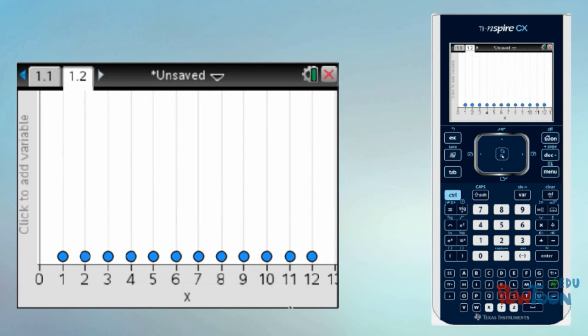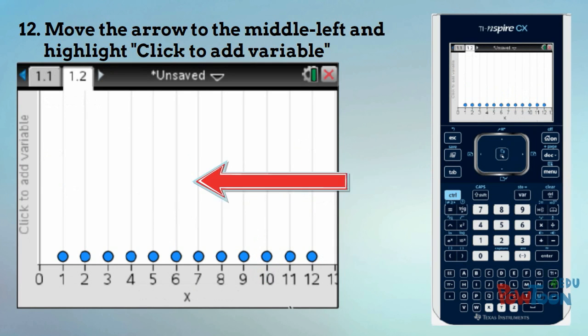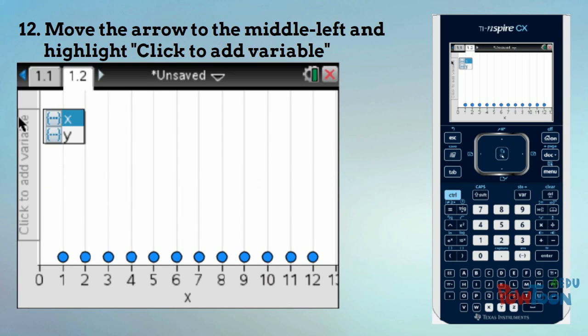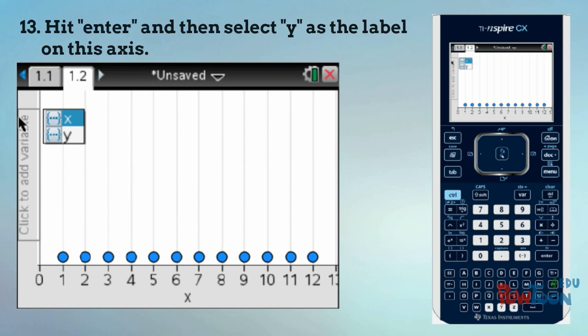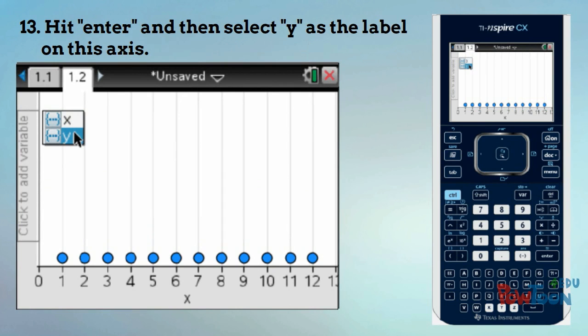Next, you want to move that cursor to the middle left of your screen and you want to get to the correct spot. A box will appear. Click on it and select Y for that axis.